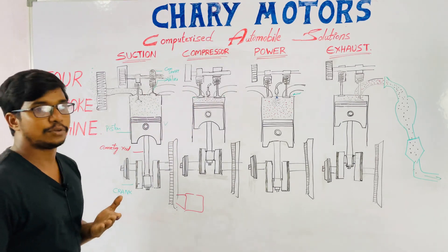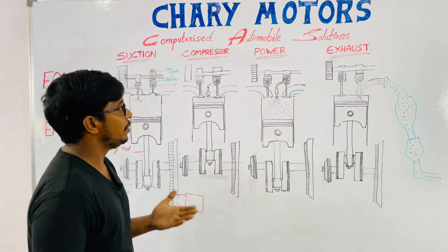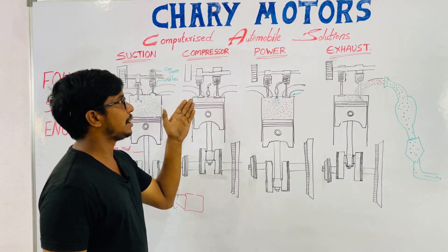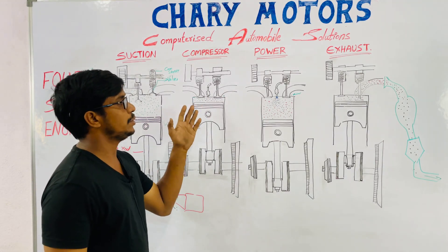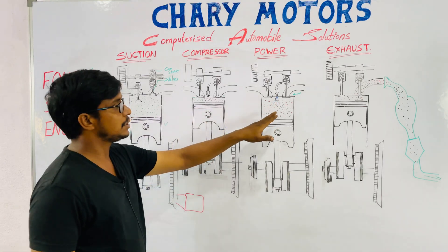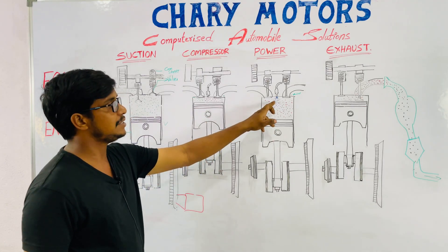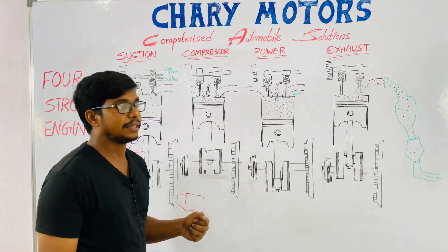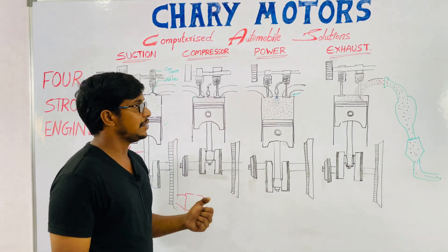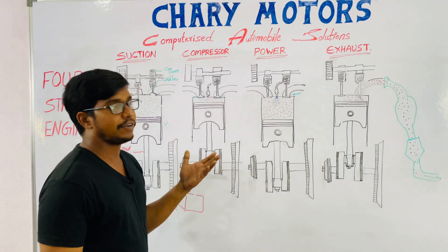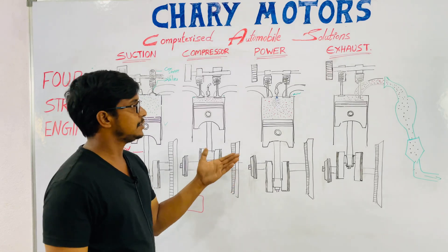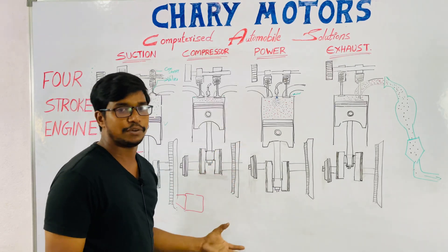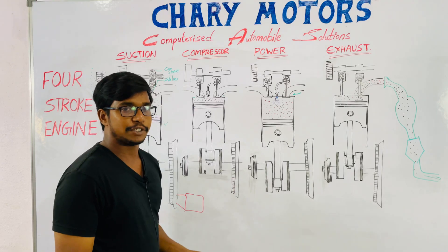The third stroke is the power stroke. Where the air is compressed in the compression stroke, in the power stroke, the diesel spray is injected into the internal combustion chamber. Then the piston gets fired and combustion occurs, and the piston moves downward. This is called the power stroke.